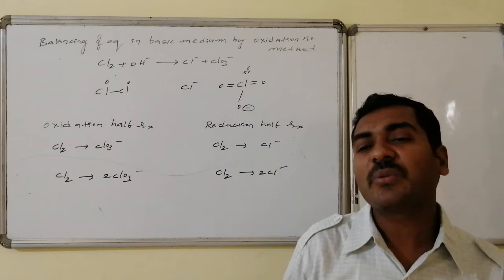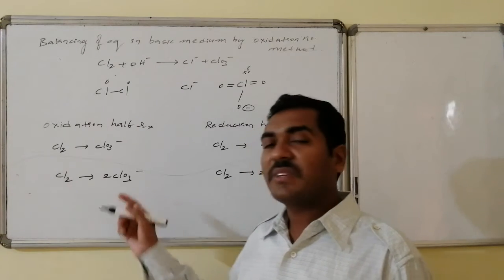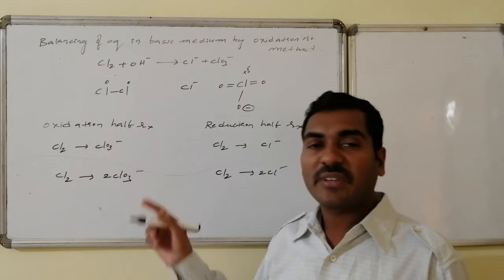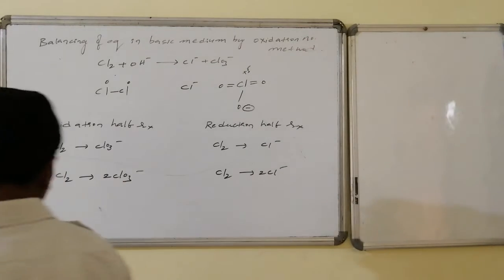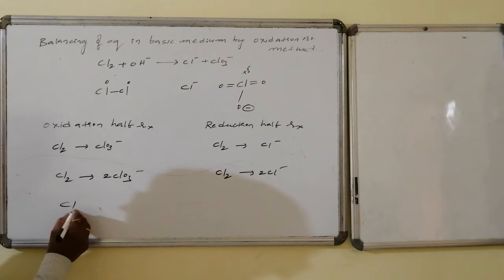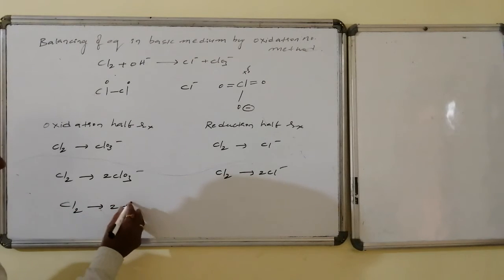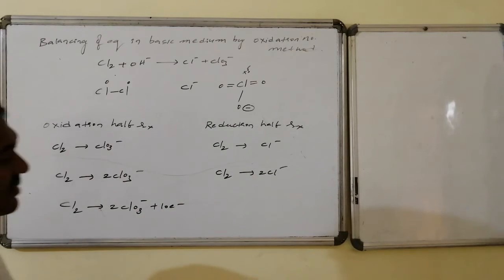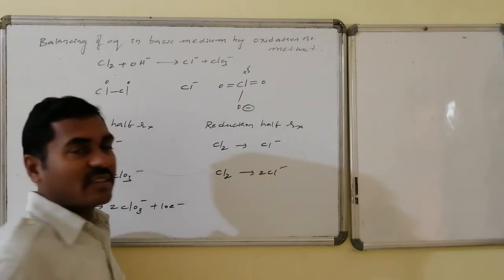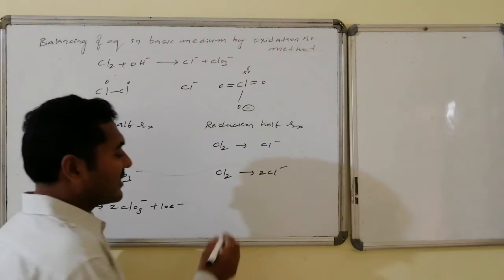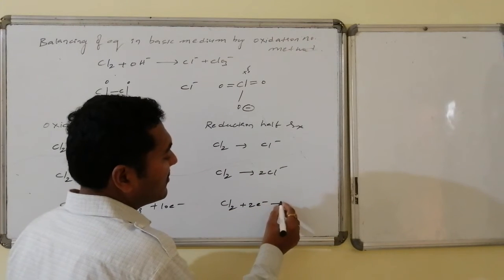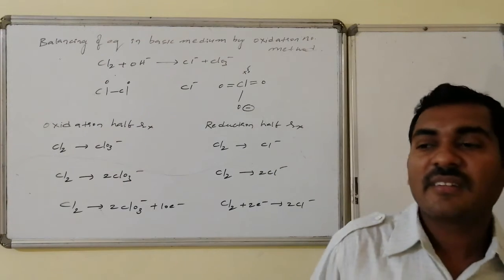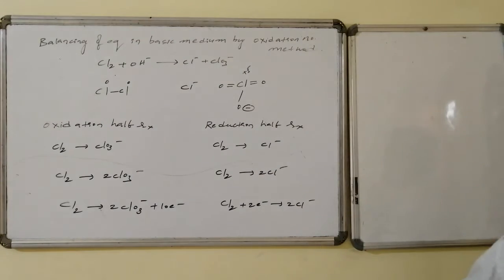For 2 chlorines, every zero is converted to plus five, representing a loss of a total of 10 electrons. Hence: Cl₂ → 2ClO₃⁻ + 10e⁻. Whereas for chloride, every zero is converted to minus one by gaining one electron, so Cl₂ gains 2 electrons to give 2Cl⁻.